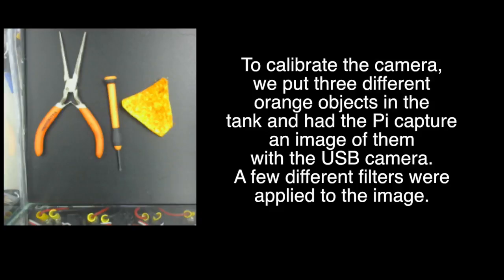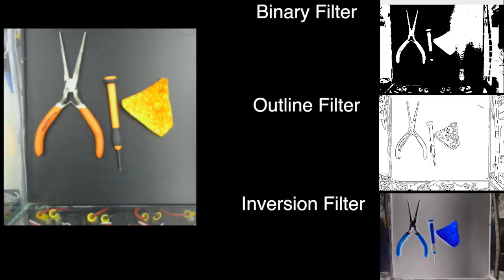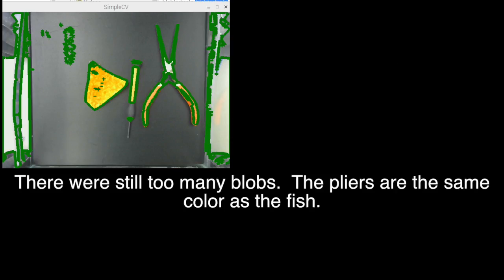To calibrate the camera, we put three different orange objects in the tank and had the Pi capture an image of them with the USB camera. A few different filters were applied to the image: the binary filter, the outline filter, and the diversion filter. There are still too many blobs.